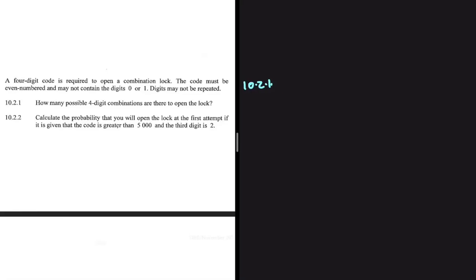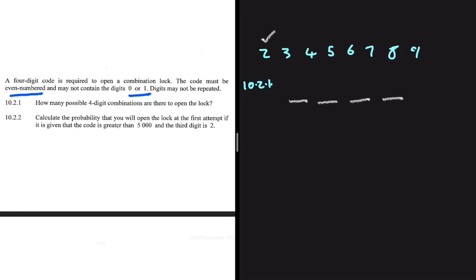A four-digit code is required to open a combination lock. The code must be even-numbered and may not contain the digits zero or one. Digits may not be repeated. So the available digits are two through nine: that gives us two, three, four, five, six, seven, eight, nine — a total of eight possible digits.